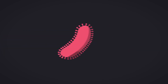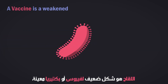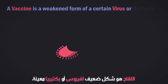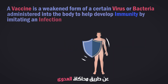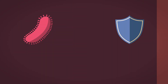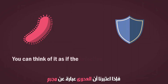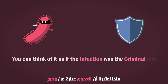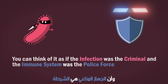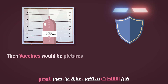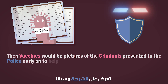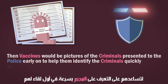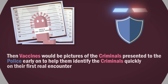What is a vaccine? A vaccine is a weakened form of a certain virus or bacteria administered into the body to help develop immunity by imitating an infection. You can think of it as if the infection was the criminal and the immune system was the police force. Then vaccines would be pictures of criminals presented to the police early on to help them identify the criminals quickly on their first real encounter.